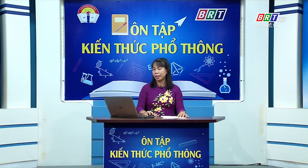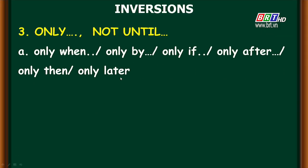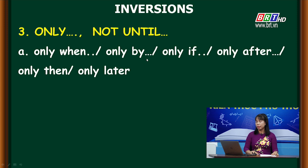Chúng ta đi tiếp trường hợp tiếp theo: các cụm từ đi với 'only' và 'not until'. Trường hợp A: 'only when' (chỉ khi), 'only by' (chỉ bằng cách), 'only if' (chỉ nếu), 'only after' (chỉ sau khi), 'only then' và 'only later' (chỉ sau đó). Now have a look at the example.